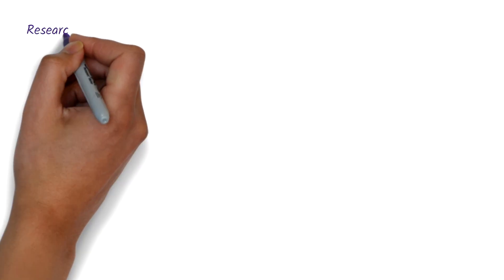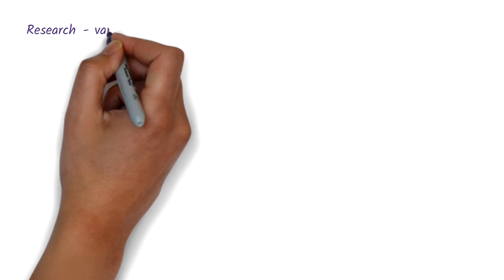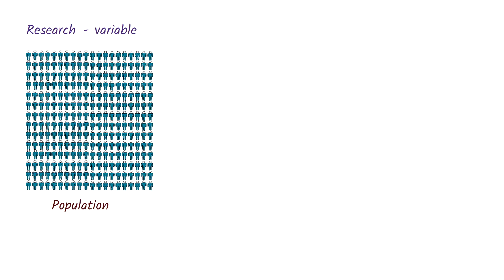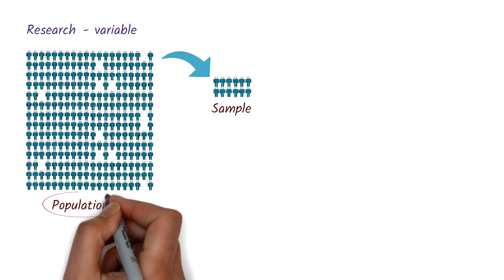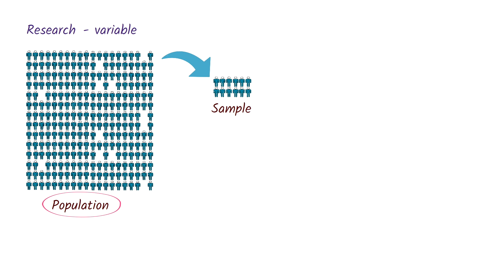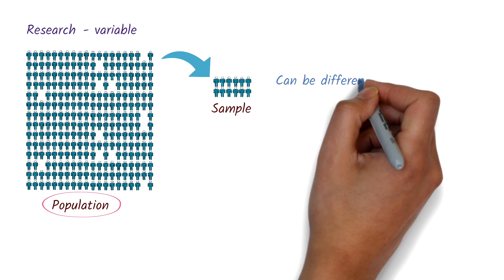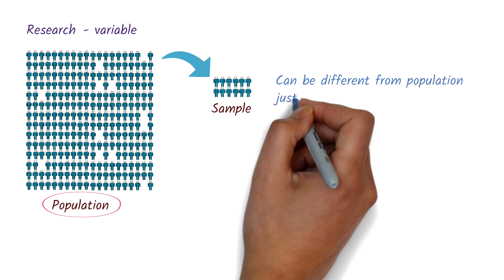In research, we're often interested in measuring a variable in a population. Since it's rarely possible to measure the entire population, we measure it from a representative sample instead and make inferences about the population. However, because a sample is only a subset of the population, the result may differ from the true population value simply due to random variation.